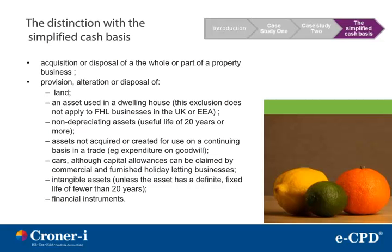The excluded categories are: acquisition or disposal of a whole or part of a property business; provision, alteration or disposal of land; an asset used in a dwelling house — this exclusion does not apply to FHL businesses in the UK or the EEA; non-depreciating assets, i.e. a useful life of 20 years or more; assets not acquired or created for use on a continuing basis in a trade, e.g. expenditure on goodwill; cars, although capital allowances can be claimed by commercial and furnished holiday letting businesses; intangible assets, unless the asset has a definite fixed life of fewer than 20 years; and finally, financial instruments.